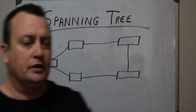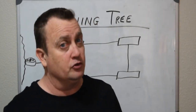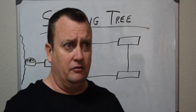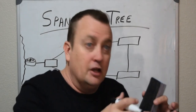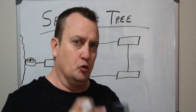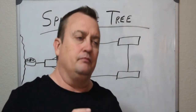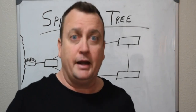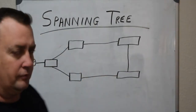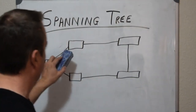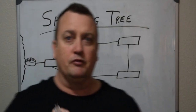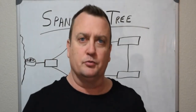The root bridge is the switch on your local area network that all other Layer 2 switches running Spanning Tree will try to create the fastest and most efficient path back to. In most cases, you want that root bridge to be the switch next to your router going out to the internet or external network. When switches are trying to prevent loops from existing, they're also trying to create the fastest path back to the root bridge.